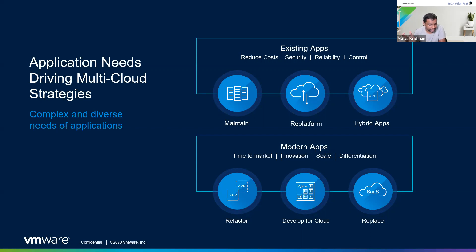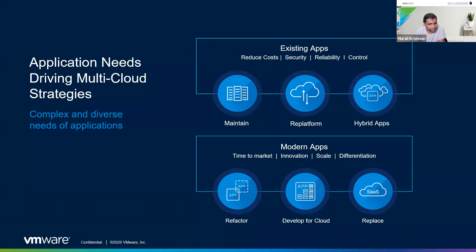Applications are also changing. There is another buzzword: app modernization. You may have heard about Kubernetes, Docker, OpenShift — these are all terms you'll be hearing. The latest trend in IT right now is app modernization: we are changing the way applications are built, installed, and managed. The best example is last time when you installed an application like Microsoft Office, you had hardware, an OS like Windows 10, then you installed the app — that is the traditional architecture.